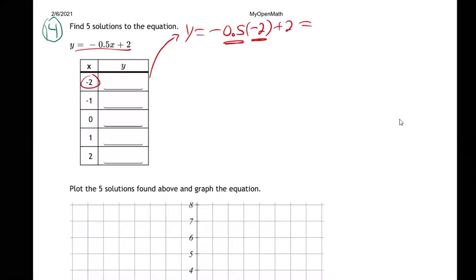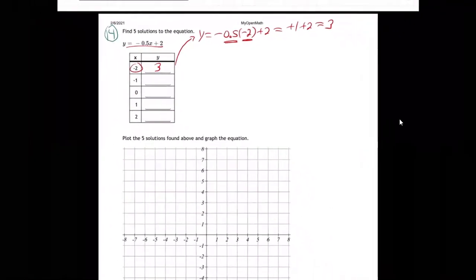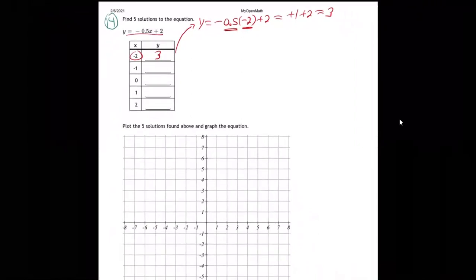I mean, I'll do it by hand. This is half of 2 which is 1, so it's positive 1 plus 2, which is 3. And then find that point on the graph - minus 2 up 3, right there. There it is.